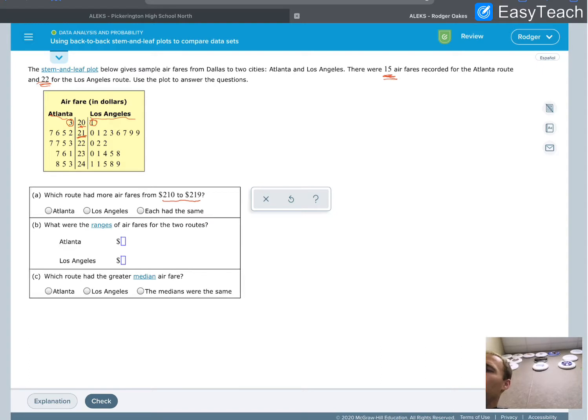So LA has 1, 2, 3, 4, 5, 6, 7, 8 of them. Atlanta only has 1, 2, 3, 4 of them. So which route has more fares? That's going to be Los Angeles. So we've got to make sure we click on that one.